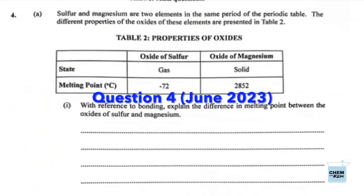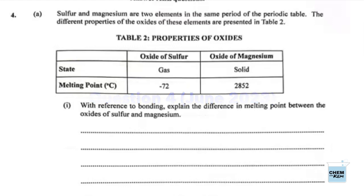Sulfur and magnesium are two elements in the same period of the periodic table. The different properties of the oxides of these elements are presented in Table 2. The oxide of sulfur is a gas with a melting point of negative 72 degrees Celsius. The oxide of magnesium is solid with a melting point of 2,852 degrees Celsius — that requires a lot of energy.